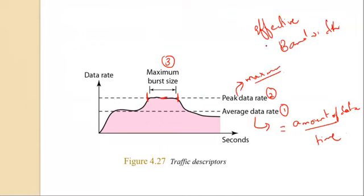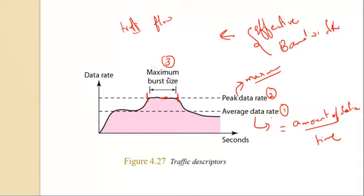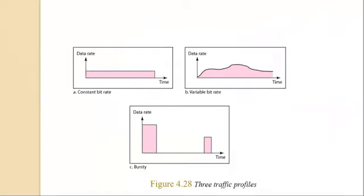Effective bandwidth is the bandwidth that the network needs to allocate for the flow of traffic — essentially what bandwidth is needed to send the data. Effective bandwidth is a function of three values: average data rate, peak data rate, and maximum burst size. The calculation is complex but these three values together give us the effective bandwidth.